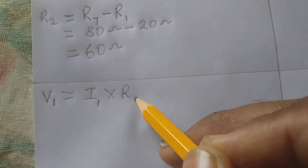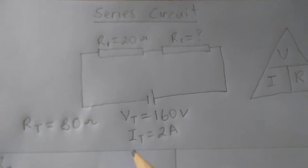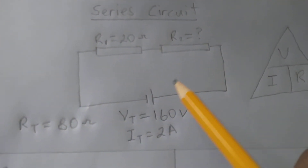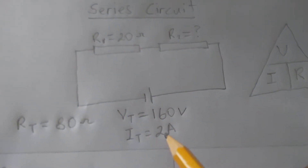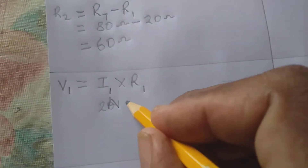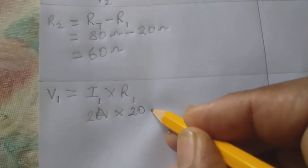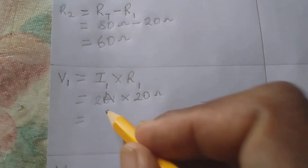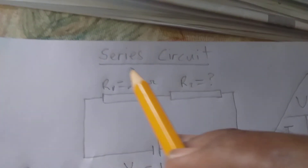Since we're looking for V1 across R1, we use V1 equals I1 times R1. An important characteristic of a series circuit is that the current is constant throughout, so the 2 amperes flows through R1 and R2. Therefore I1 is 2 amperes, multiplied by R1 which is 20 ohms. Two times 20 gives us 40 volts — so the voltage across the first resistor is 40 volts.